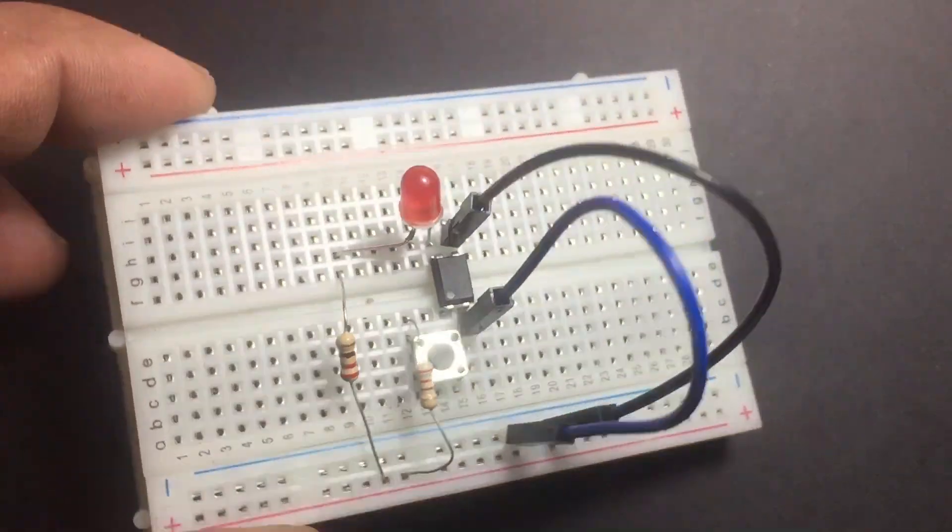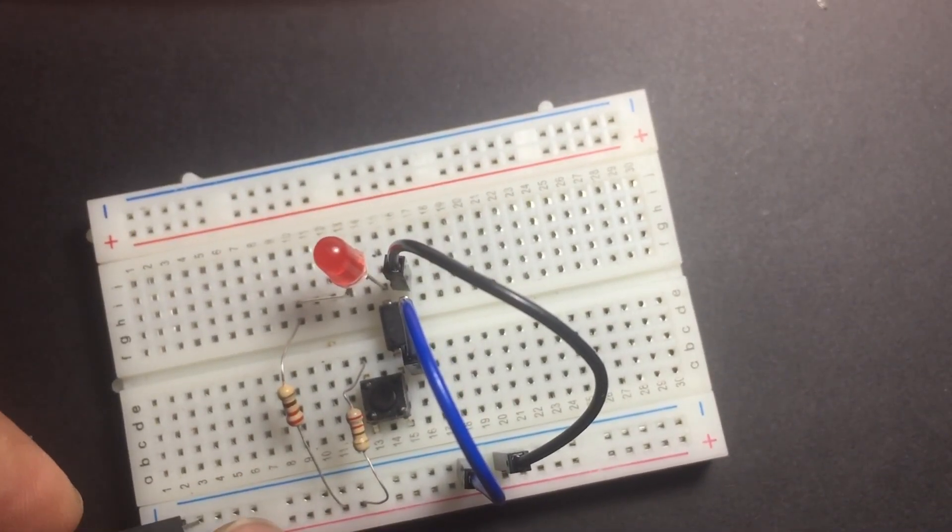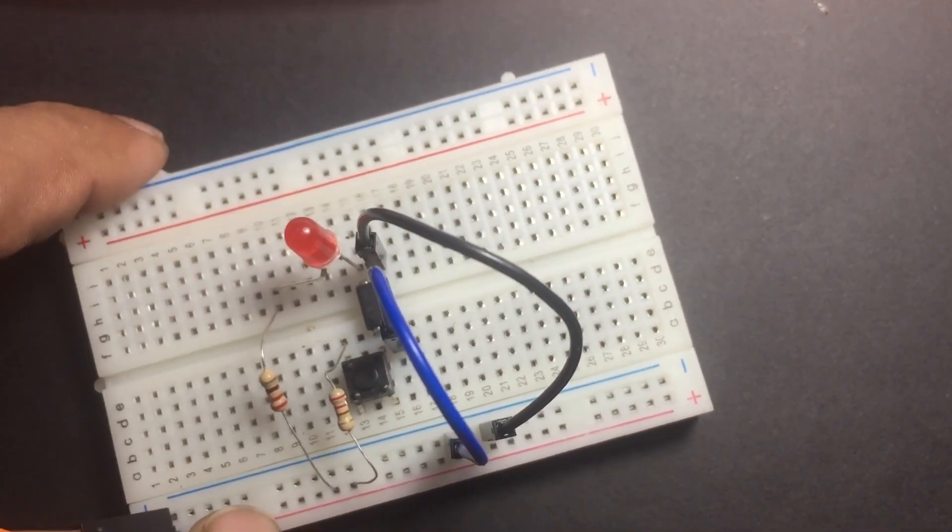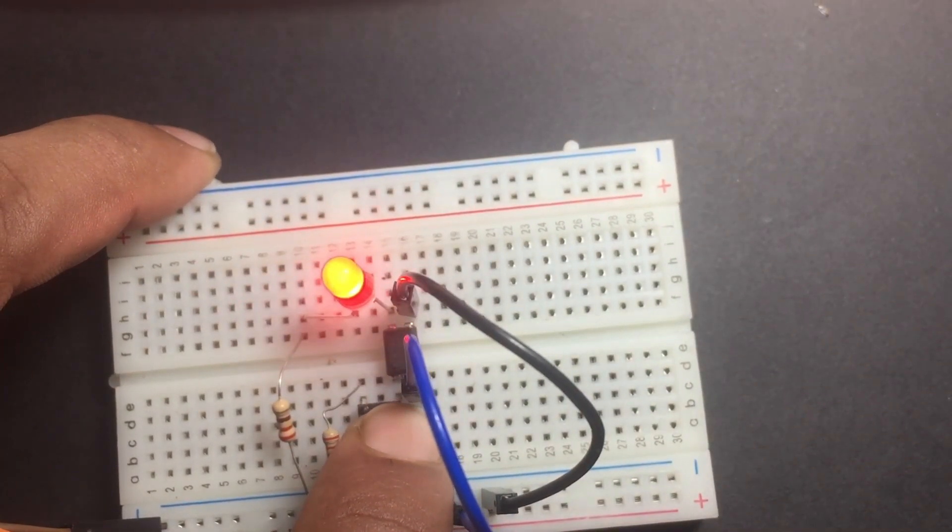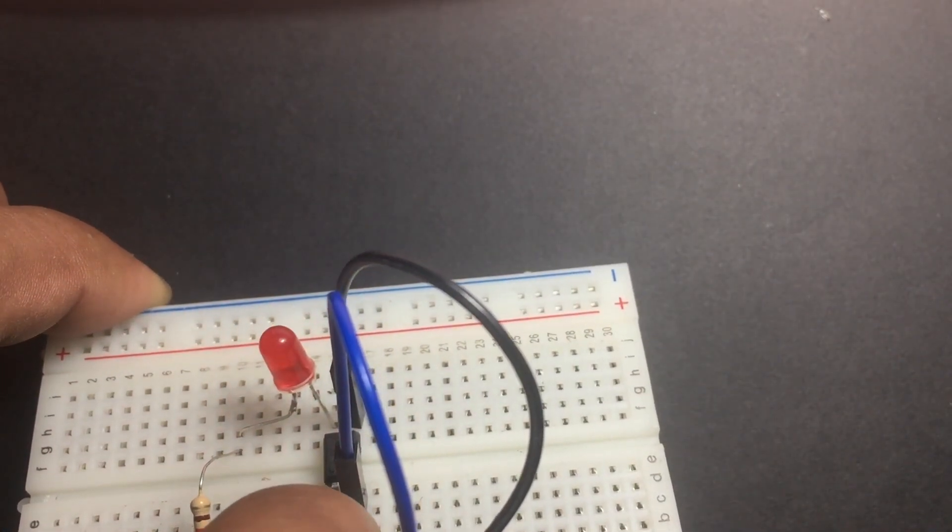The wiring part is over. This circuit is common positive connection. That is to switch on or off the ground pin. You can see when the button is pushed the LED is working.